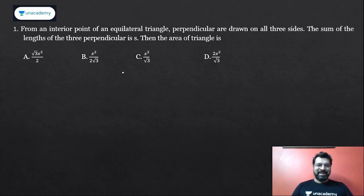From an interior point of an equilateral triangle, perpendiculars are drawn on all sides. The sum of the lengths of the three perpendiculars is s. Then the area of the triangle is: The question says there is an equilateral triangle, and there is any one point inside it, an interior point. From that we have dropped perpendiculars on the sides. Now this point can be anywhere.